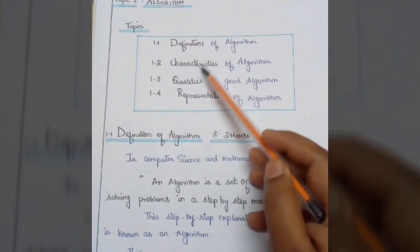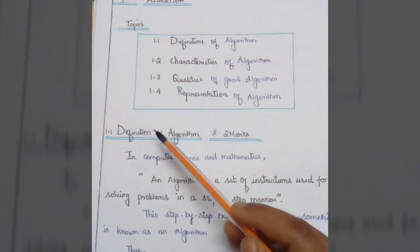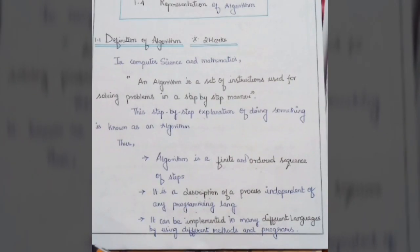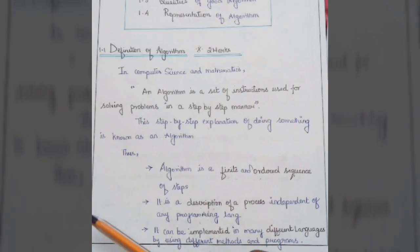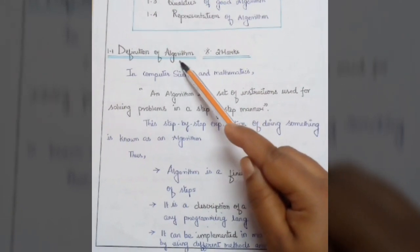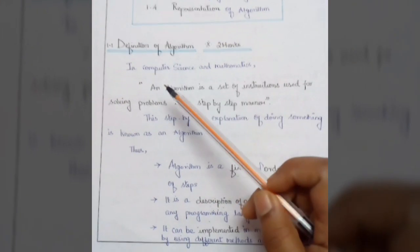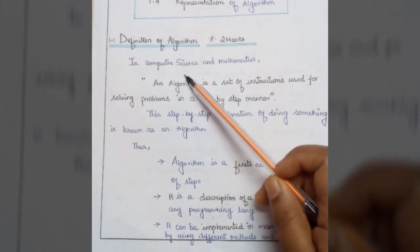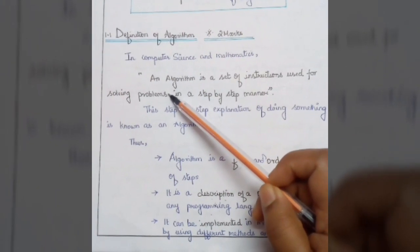Coming to the topic algorithm, first we have to discuss the definition of an algorithm. In computer science and mathematics, an algorithm is a set of instructions used for solving a problem in a step-by-step manner.